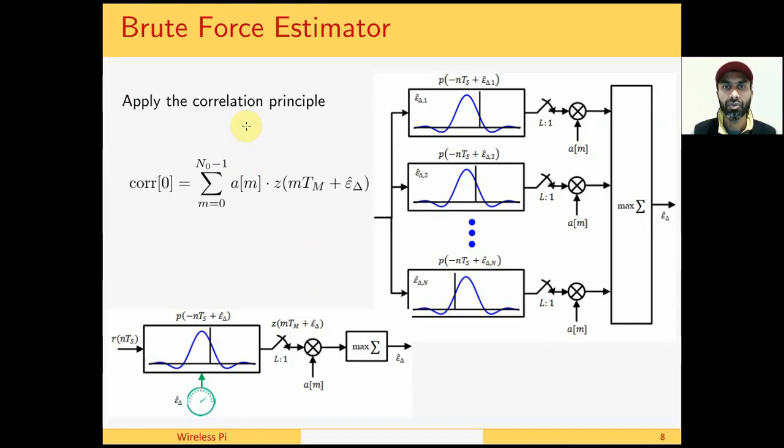Our first timing estimator is a feed-forward solution, and it is called brute force estimator. So we apply the correlation principle. By now we are very familiar with what correlation does. Here we have the matched filter output sampled at wrong times. The first thing we do is we remove the effect of modulation. These are known symbols, and we have seen in the lecture on carrier phase synchronization how this multiplication removes the effect of the modulation symbols from the matched filter output. No conjugate is needed because we are discussing pulse amplitude modulation.